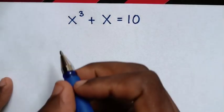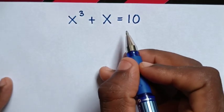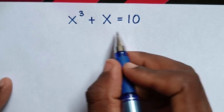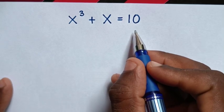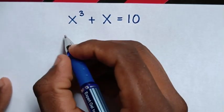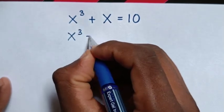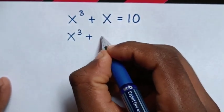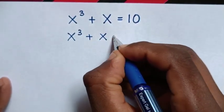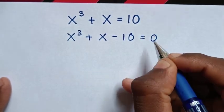Hello. How to solve x power 3 plus x is equal to 10, to find the values of x from this equation. So we take 10 to the right side, then it will be x power 3 plus x minus 10 is equal to 0.